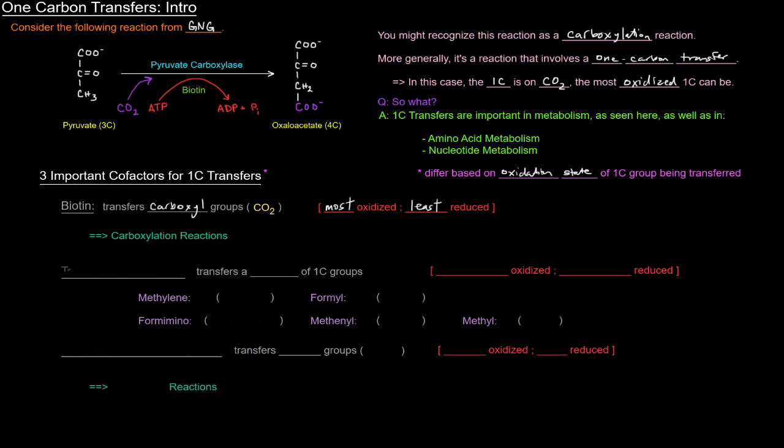Another important cofactor is tetrahydrofolate, or THF, otherwise known as tetrahydrofolic acid. This guy transfers a variety of one carbon groups that are often, most of them are intermediately oxidized. Intermediately oxidized, or intermediately reduced, again, depending on how you look at it.